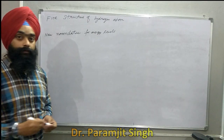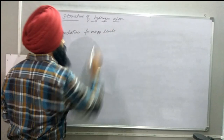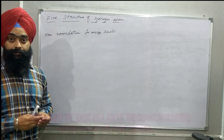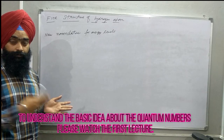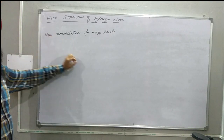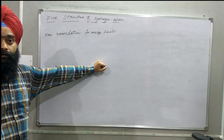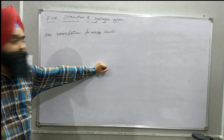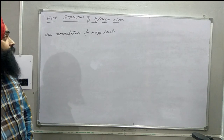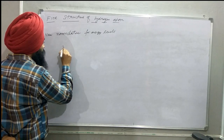Let us discuss the fine structure of hydrogen atom. In order to understand this fine structure, we need information about the quantum numbers we have discussed already in the previous lecture. When the spectral line of hydrogen atom was observed under a high resolution spectrometer, it was observed that each spectral line was a combination of two or three lines, and this is called the fine structure of hydrogen atom. With this, we have a new nomenclature for the energy levels.